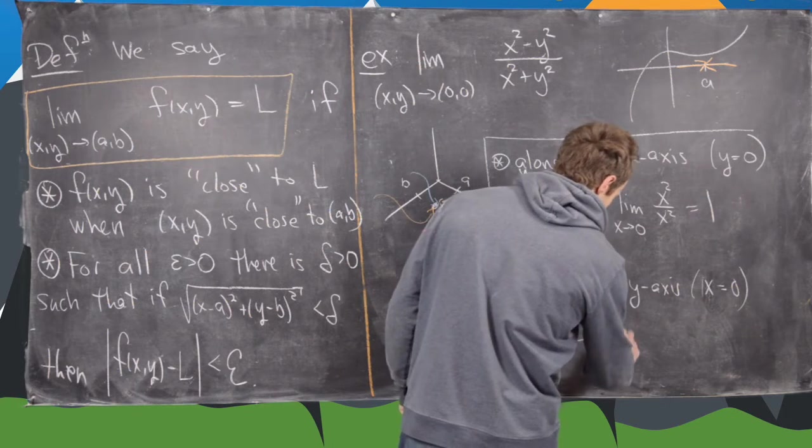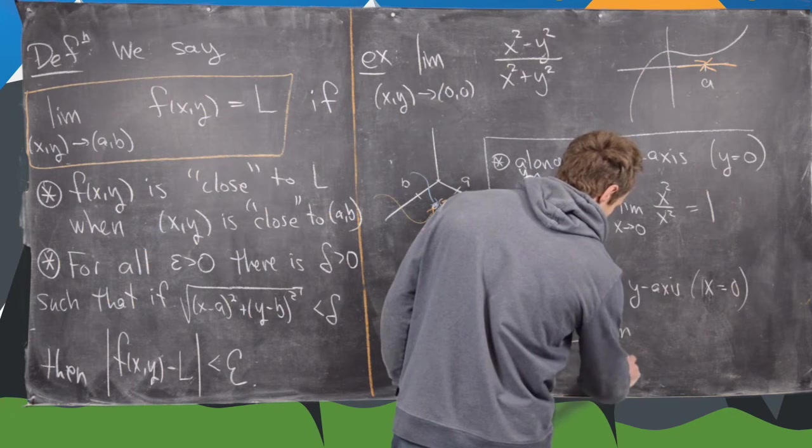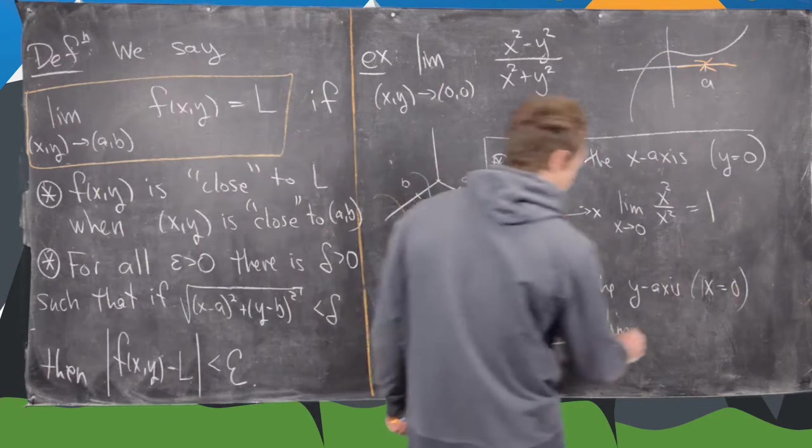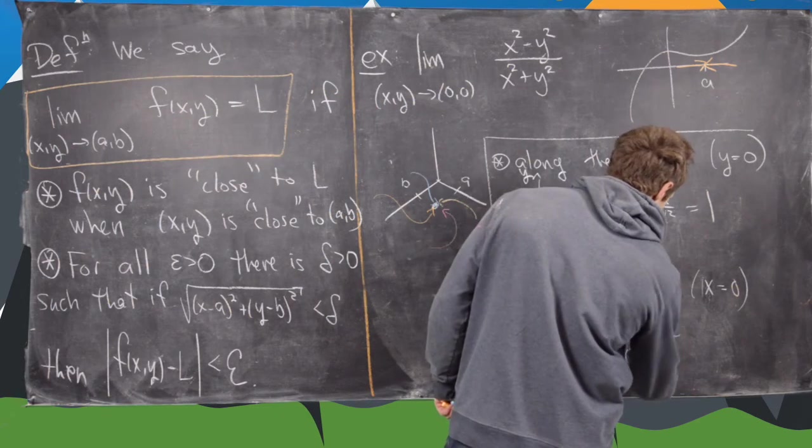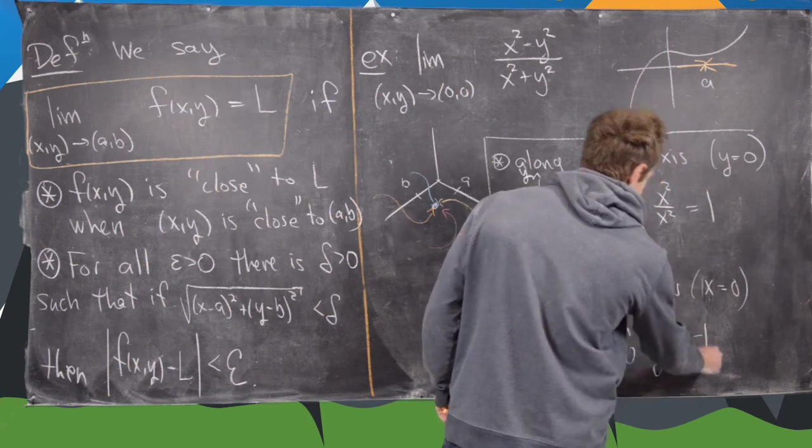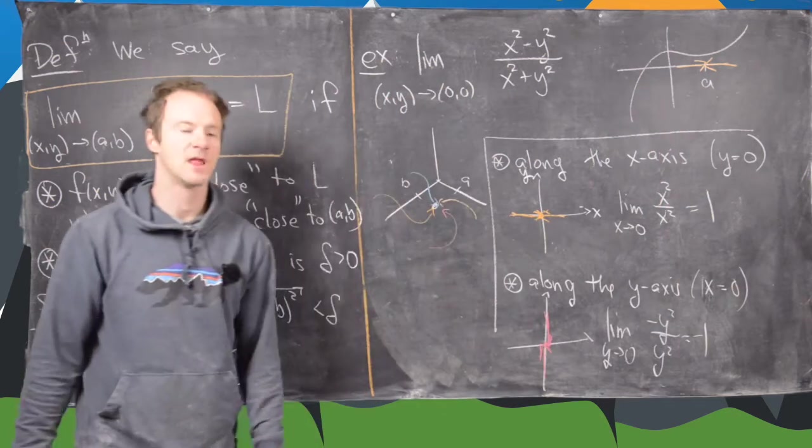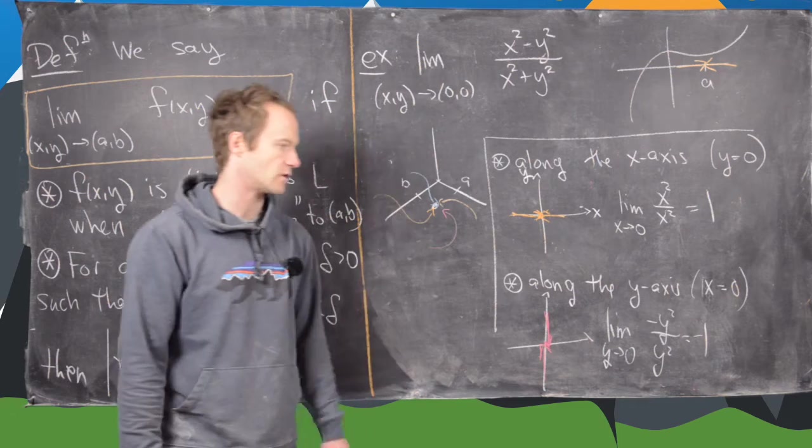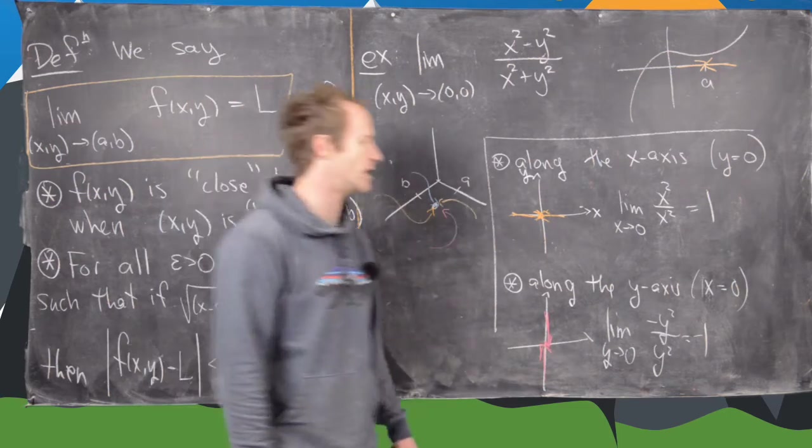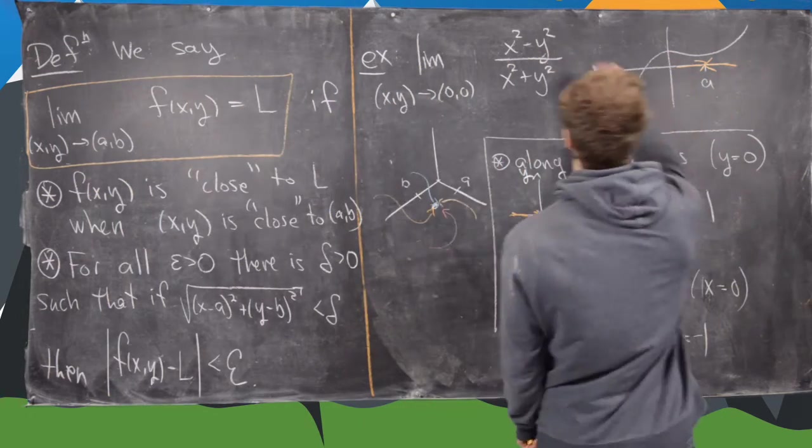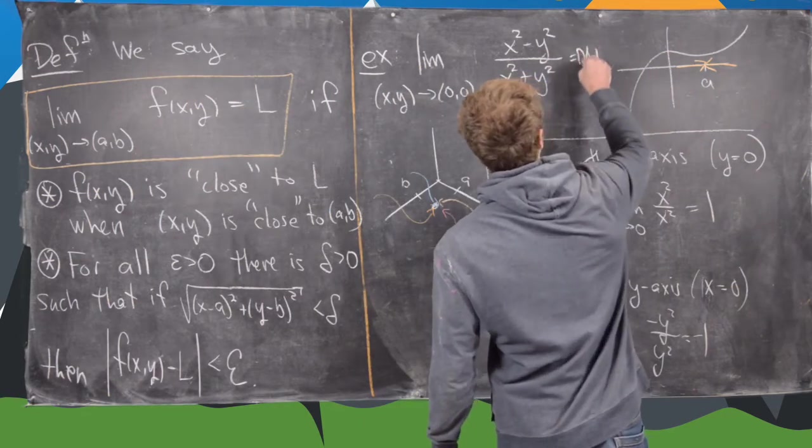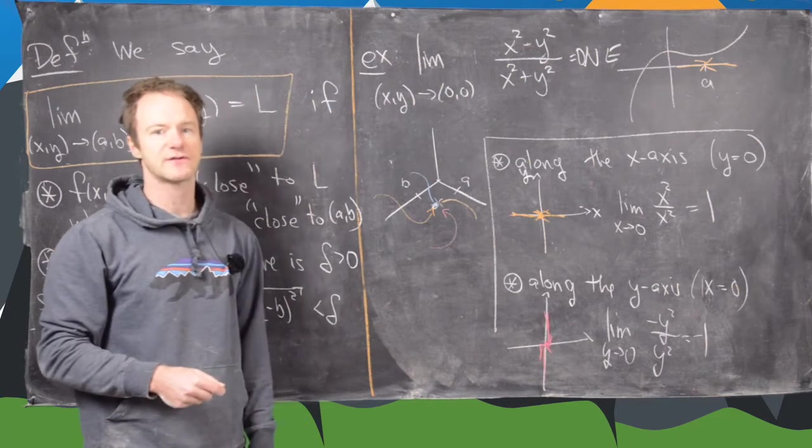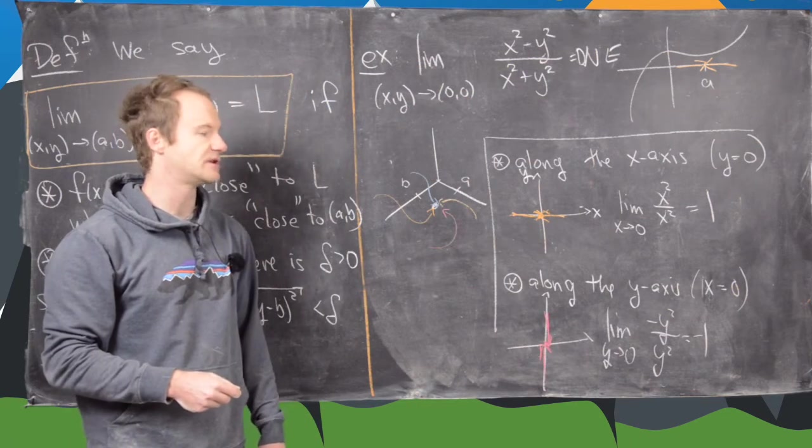That's going to collapse this limit to the limit as y goes to zero of negative y squared over y squared, which is equal to negative one. So now what we've got is the limit along the x axis is one, along the y axis is negative one. That means this limit does not exist because we have approached it from two different spots and we've gotten two different values.